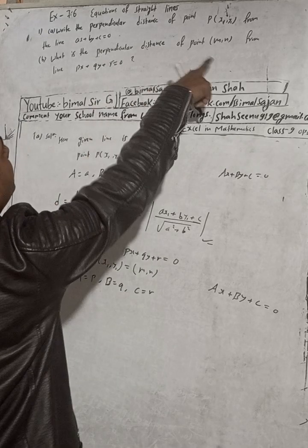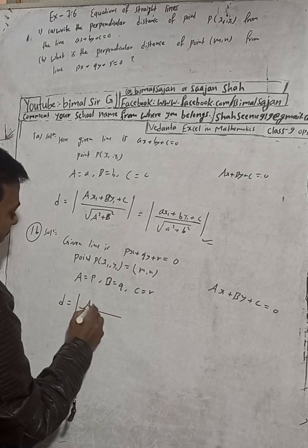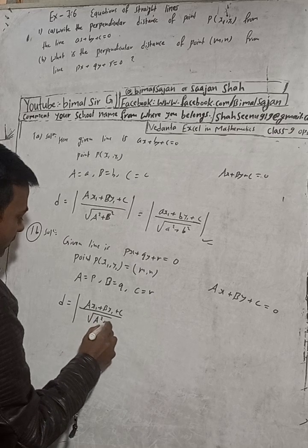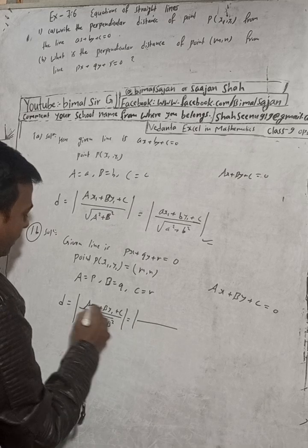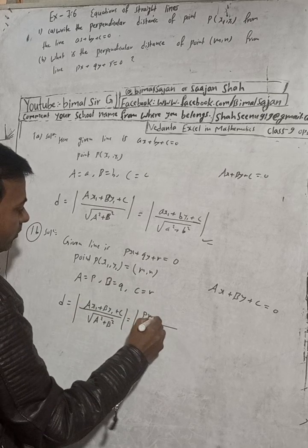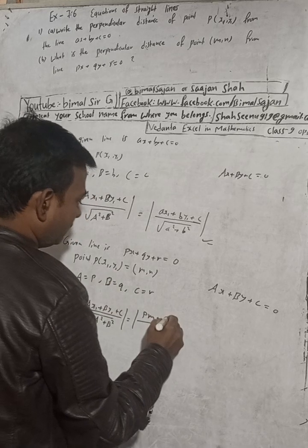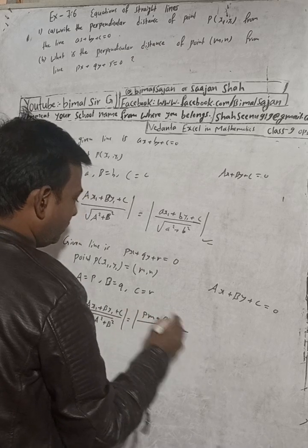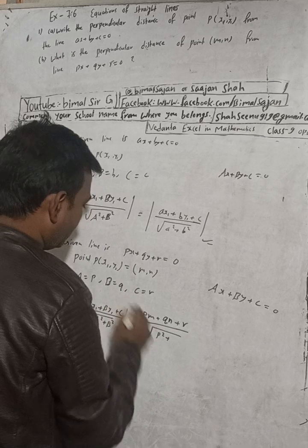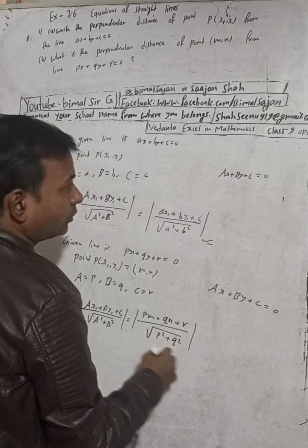Now the perpendicular distance formula is D equals ax1 plus by1 plus c divided by root under a squared plus b squared. Substituting: in place of a there is p, x1 is l, so we get pm; in place of b there is q, y1 is m, so qm; and c is r. In the denominator, a squared is p squared and b squared is q squared. So the perpendicular distance is pm plus qm plus r divided by root under p squared plus q squared.